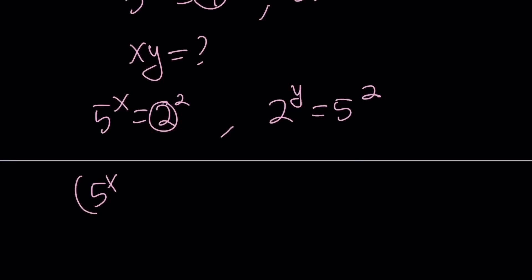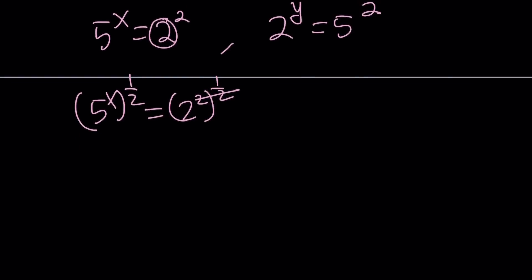So 5 to the x to the power of 1 half is 2 to the 2 to the 1 half. And here the 2's are going to cancel out. And we're going to end up with the following. 2 equals 5 to the power 1 half of x. Awesome. And then we have 2 to the y equals 5 squared.